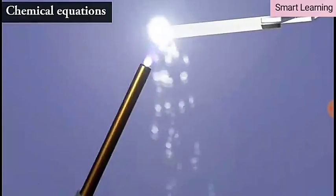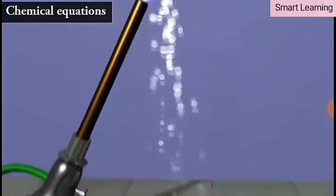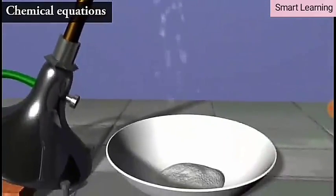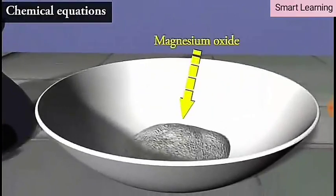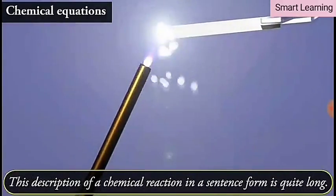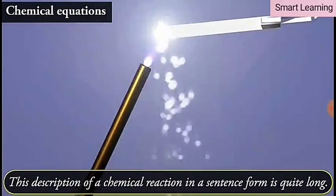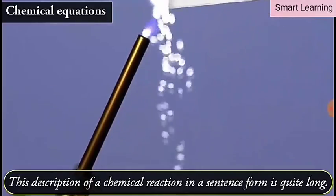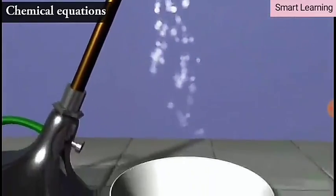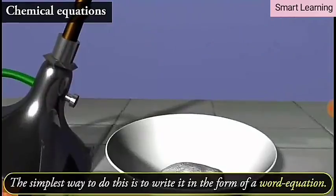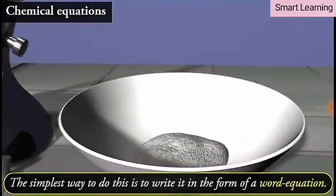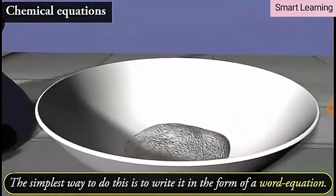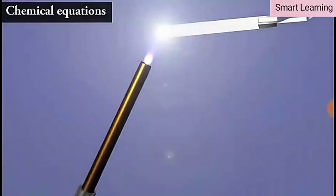When a magnesium ribbon is burnt in oxygen, it gets converted to magnesium oxide. This description of a chemical reaction in sentence form is quite long. It can be written in a shorter form. The simplest way to do this is to write it in the form of a word equation.